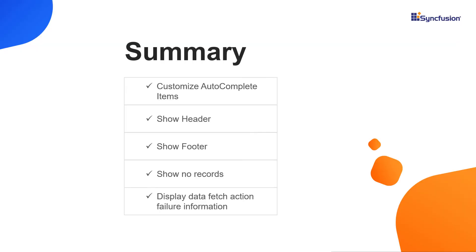That's it. Let me summarize the main points. I explained how to customize the appearance of autocomplete items, header, footer, and finally I showed how to display no records information and show data fetch action failure information using template. You can download this working example from the GitHub link in the video description below. You can also see about getting a free license key to use our Blazor products if you are eligible for our community license. If you found this video useful, click the like button and subscribe to our channel to get notifications about new videos.